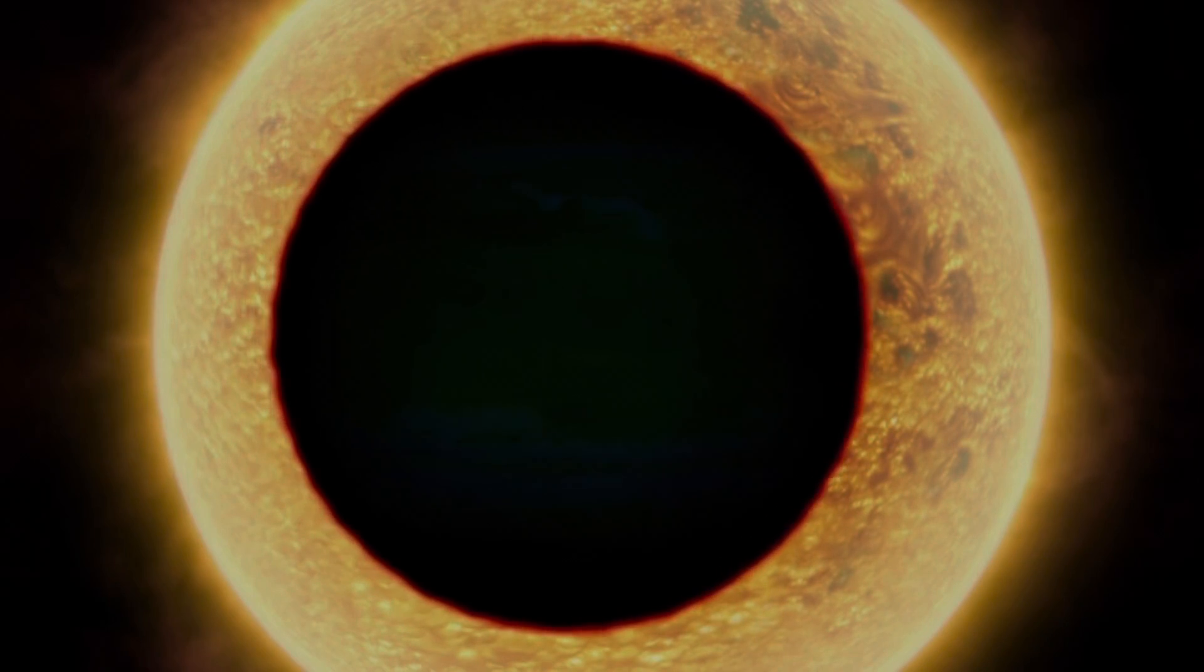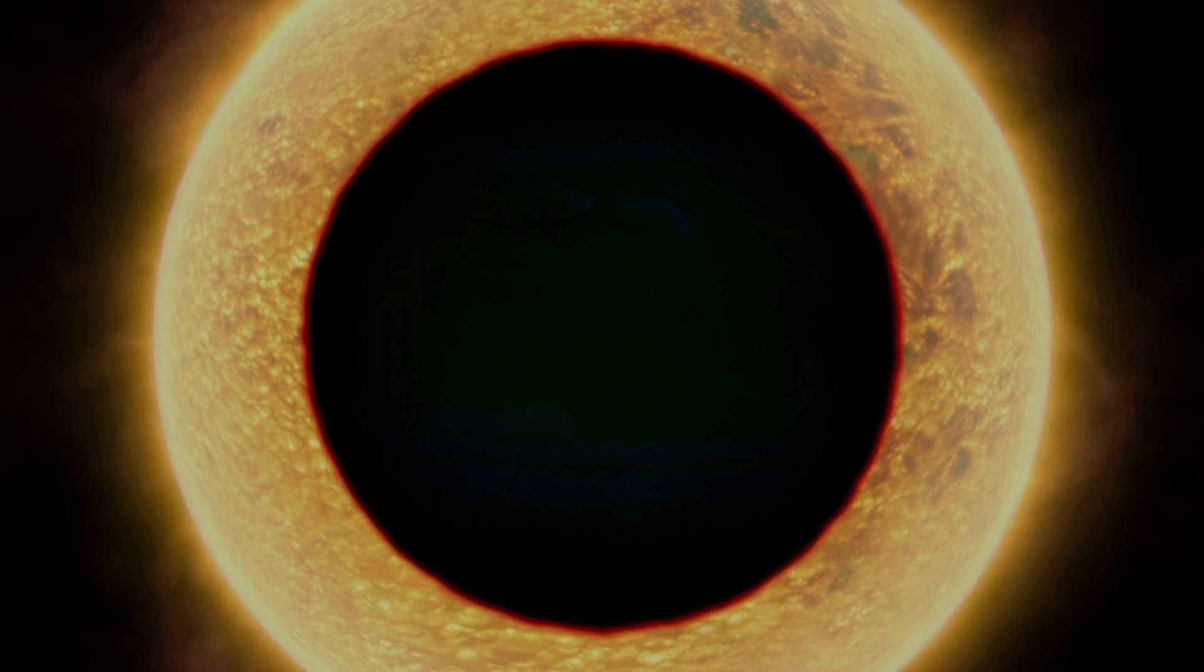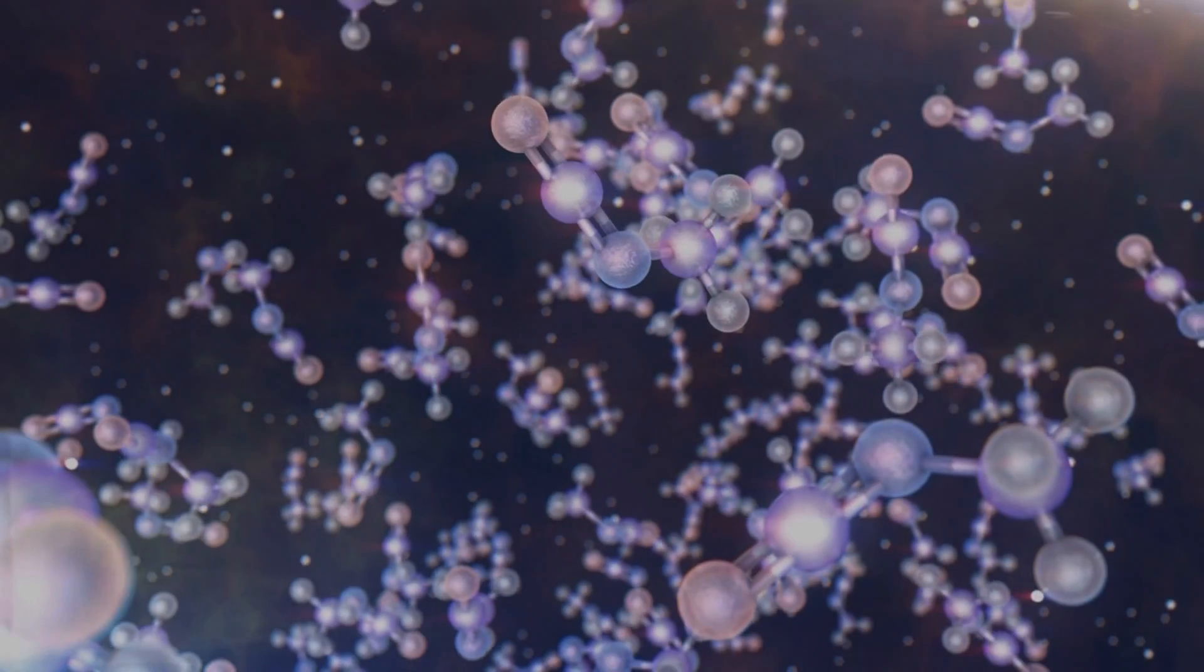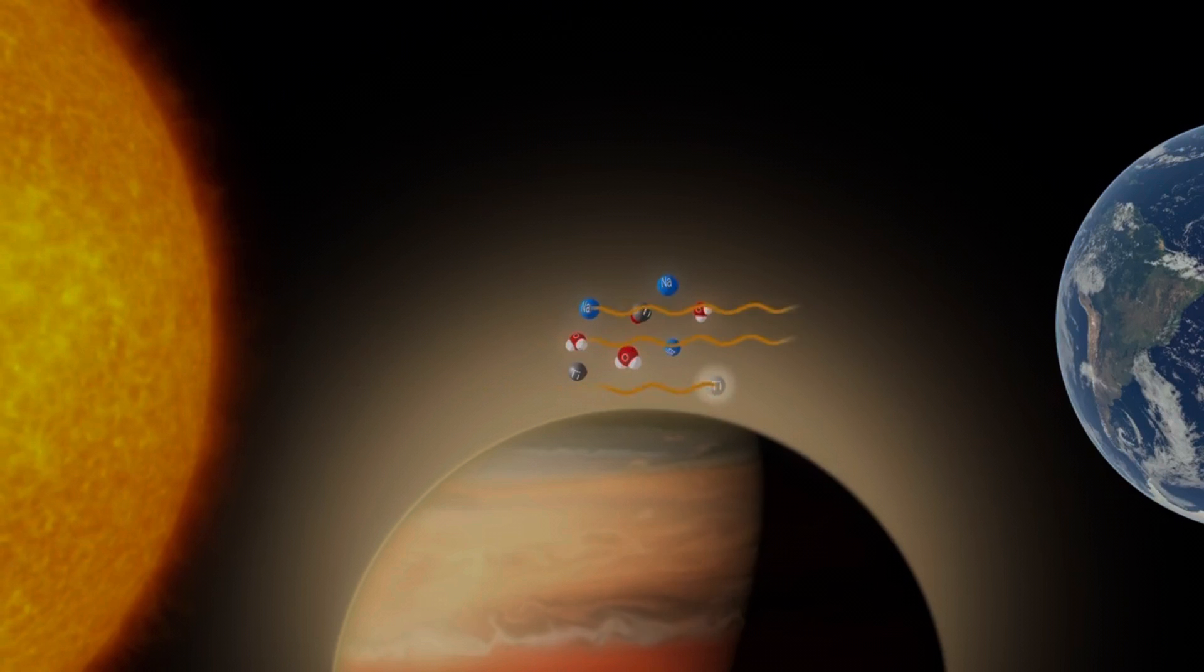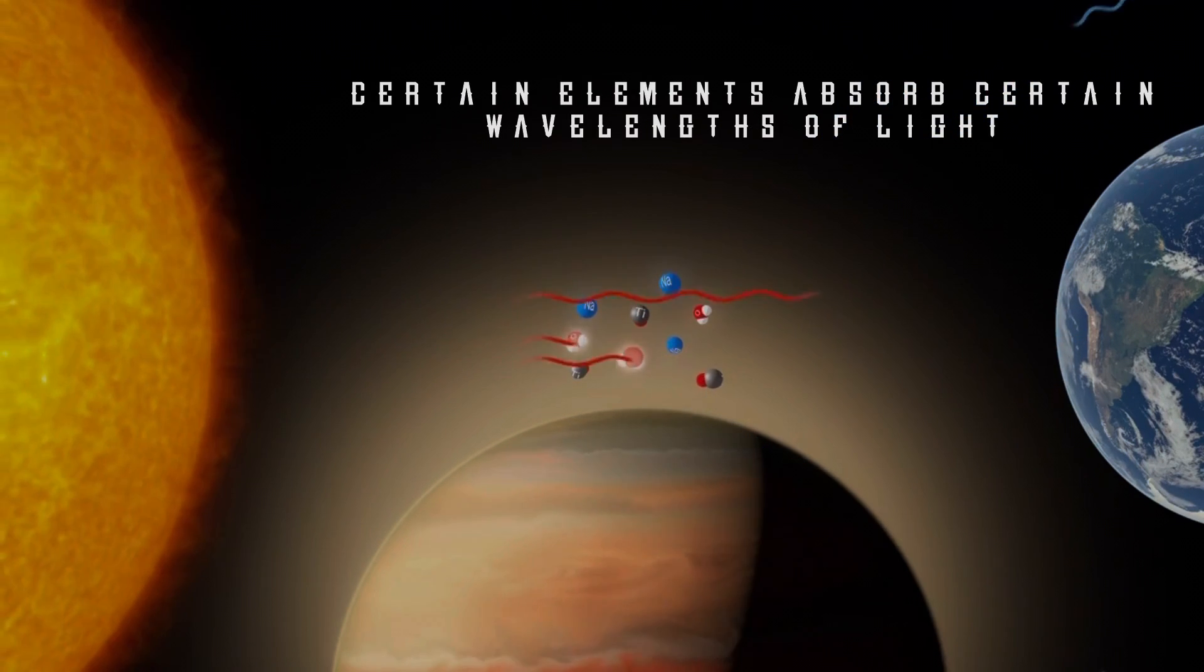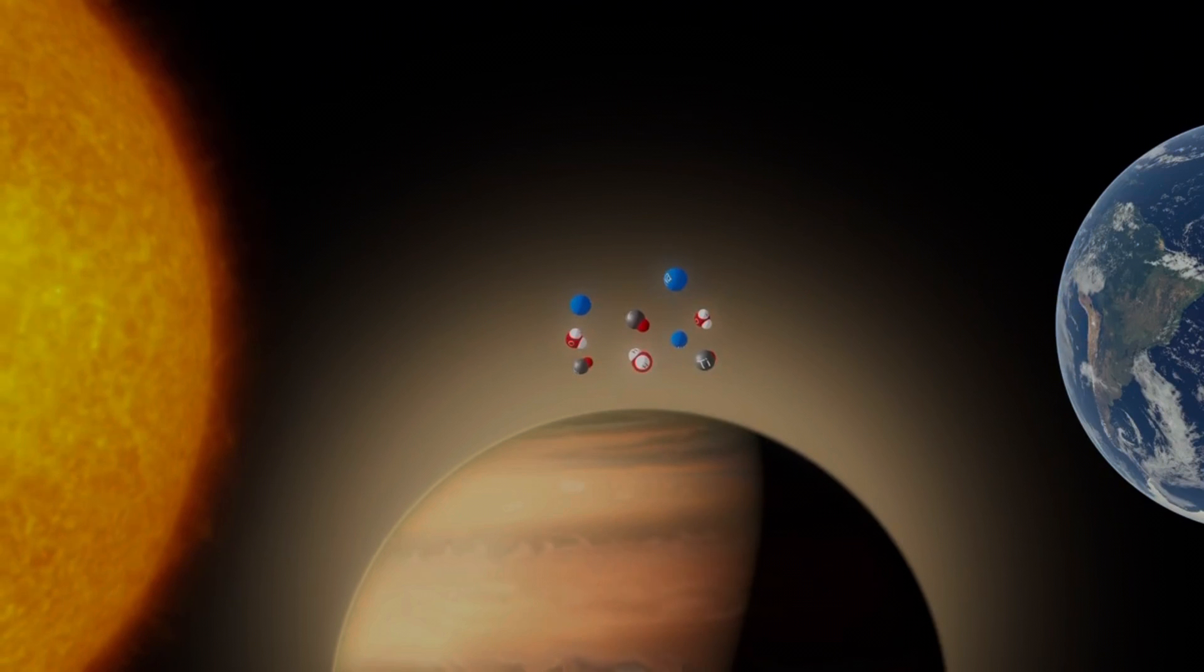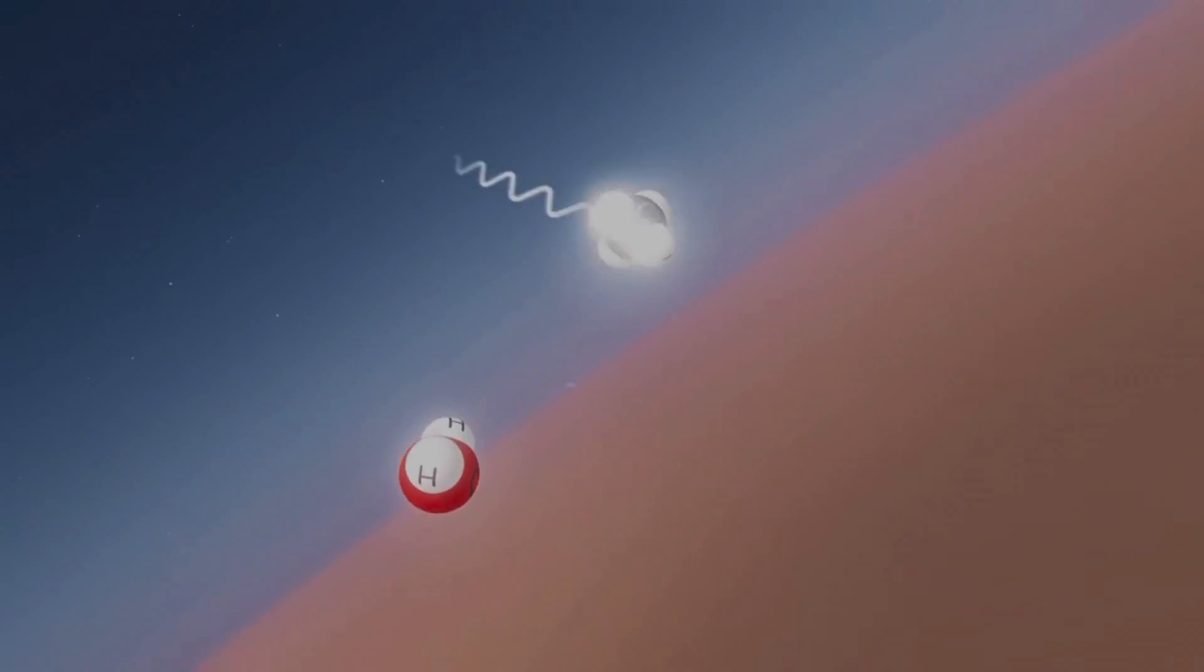What essentially is happening is, as the planet passes in front of the star, the light from the host star passes through the atmosphere of the planet and reaches the telescope. When that happens, there are different elements and compounds present in the atmosphere of the planet that absorb very specific wavelengths of light.